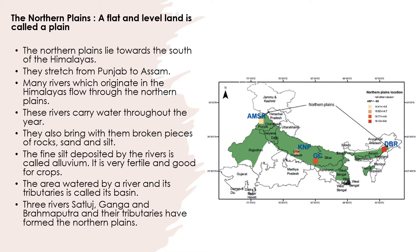These rivers carry water throughout the year. They also bring with them broken pieces of rocks, sand and silt. The fine silt deposited by the rivers is called alluvium. It is very fertile and good for crops. The area watered by a river and its tributaries is called its basin.